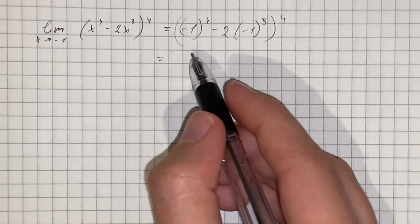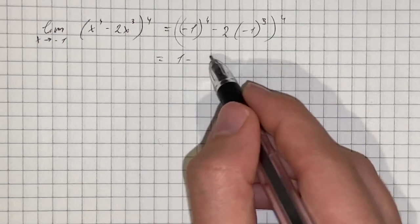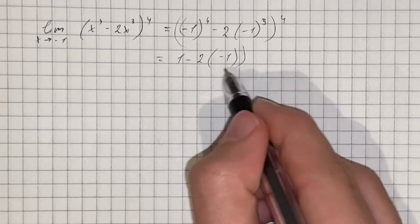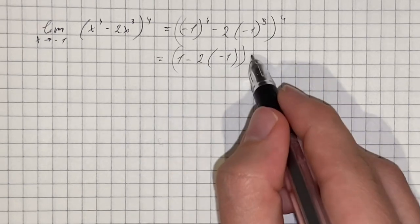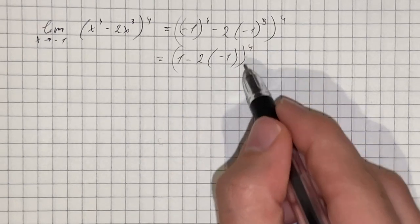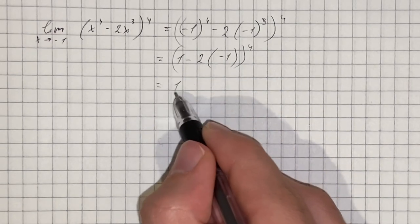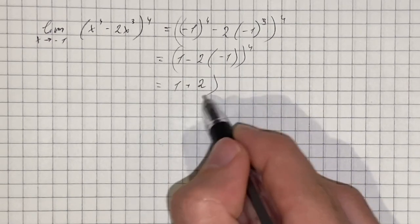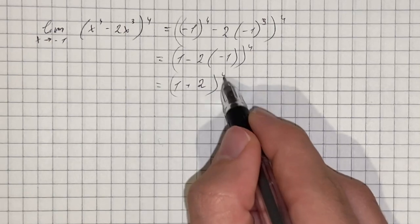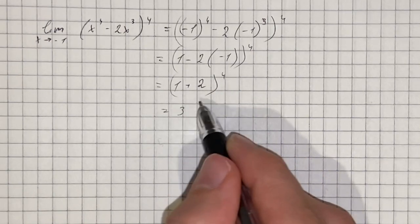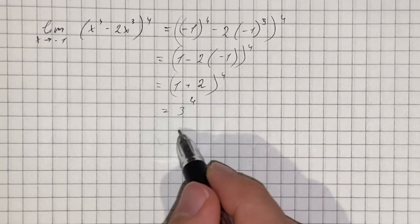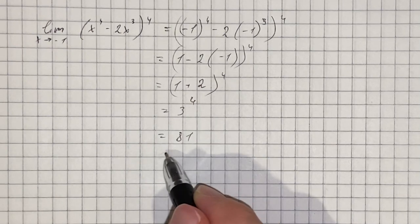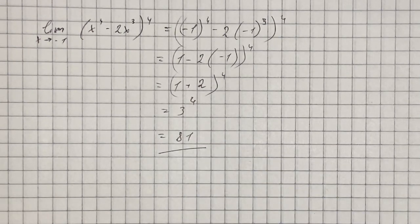That's going to be 1 minus 2 times negative 1, to the power of 4 — that's going to be 1 plus 2, to the fourth power. That's going to be 3 to the fourth power, which equals 81. So that's the value of the given limit.